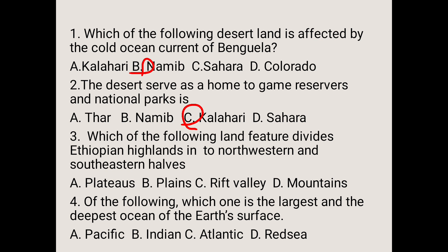Question number three: which of the following land features divides Ethiopian highlands into northwestern and southwestern halves? A. Plateau, B. Plains, C. Rift Valley, D. Mountains. The answer is C — Rift Valley is the physiographic feature that divides Ethiopian highlands into northwestern and southwestern halves.